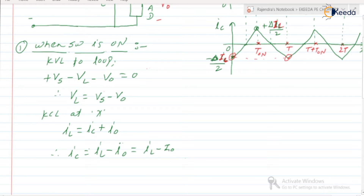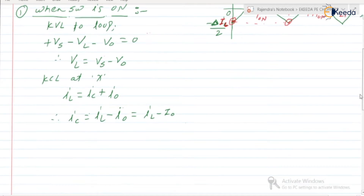As long as converters are considered, we have two assumptions: one is that the load voltage is constant, and the second is that the load current is constant.